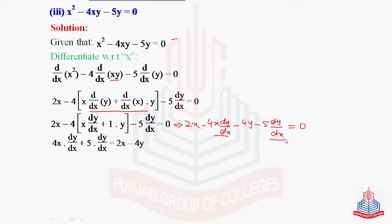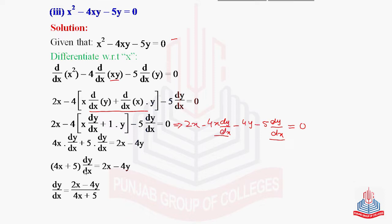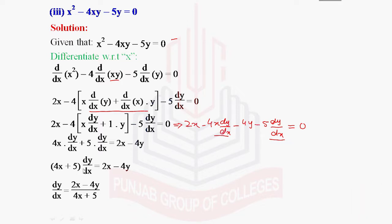To isolate dy/dx, we shift the terms containing dy/dx to one side: 4x(dy/dx) + 5(dy/dx) = 2x − 4y. Taking dy/dx common: dy/dx·(4x + 5) = 2x − 4y. Dividing both sides by (4x + 5): dy/dx = (2x − 4y) / (4x + 5), which is our final required result.